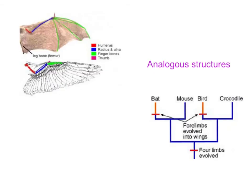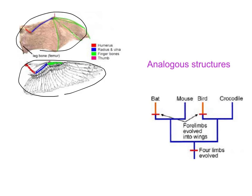Analogous structures are important because they are NOT used for creating phylogenies — they're almost distracting. They come from a different ancestor and result from selection pressure. For example, the bat wing and bird wing are analogous structures, not homologous. Looking at their phylogeny, four limbs evolved early on, but bats and birds had already diverged from one another long before wings developed independently in each lineage.